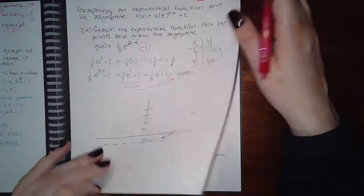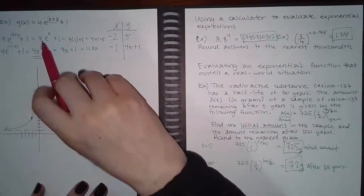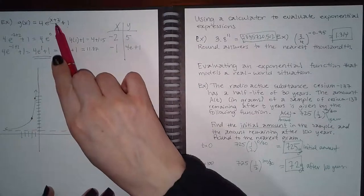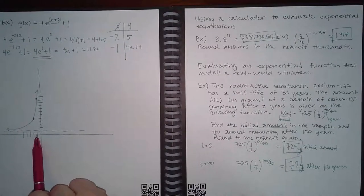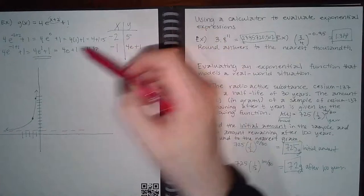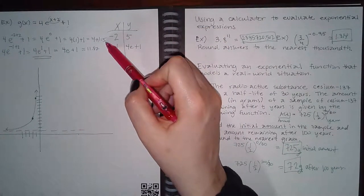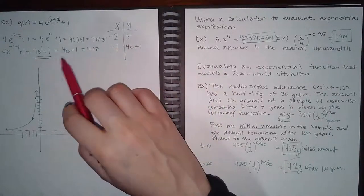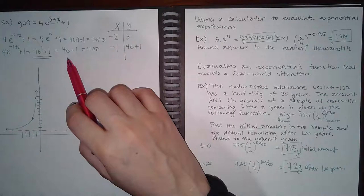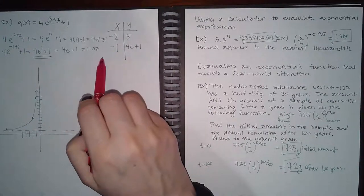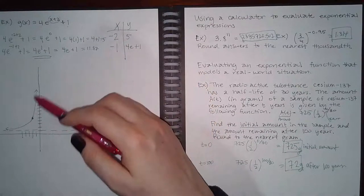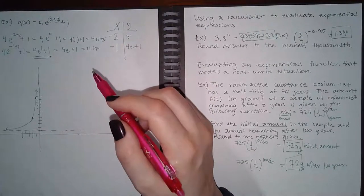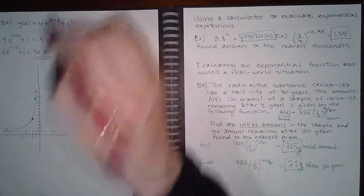Once you have your two points and the asymptote, hit the graph button in ALEKS and it will draw the graph for you. In another example, what makes the exponent equal to zero is x = -2, and one to the right is x = -1. Plugging in -2 gives y = 5, and plugging in -1 gives 4e + 1. You need the calculator to get the decimal value, but in ALEKS you type in 4e + 1. The asymptote here shifts up one, not at zero.